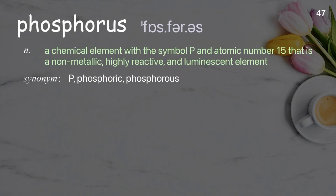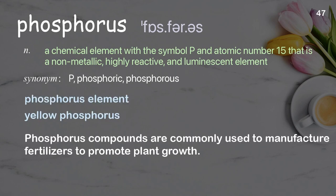Phosphorus: a chemical element with the symbol P and atomic number 15 that is a non-metallic, highly reactive, and luminescent element. Examples: phosphorus element, yellow phosphorus. Phosphorus compounds are commonly used to manufacture fertilizers to promote plant growth.